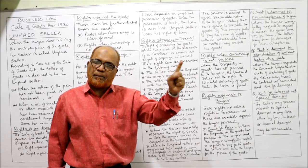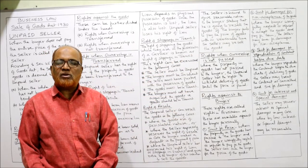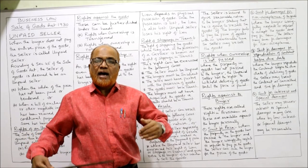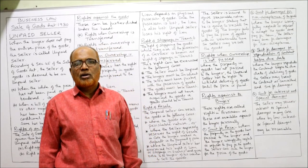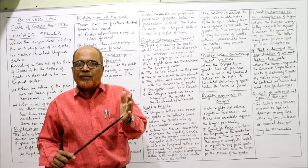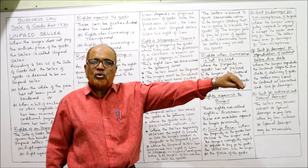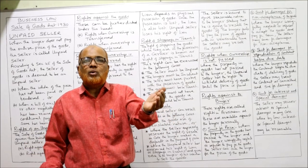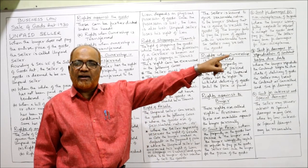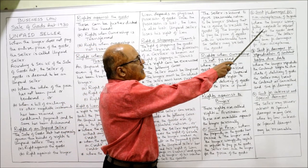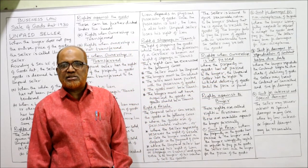Second, suit for damages for non-acceptance of goods. Sometimes the unpaid seller has already sent the goods to the buyer, but the buyer refuses to accept them. Ownership is transferred but possession is not. In that case also, the unpaid seller will drag the buyer into court for damages. Where the buyer wrongfully neglects or refuses to accept the goods and pay for them, the seller may sue for damages for non-acceptance.